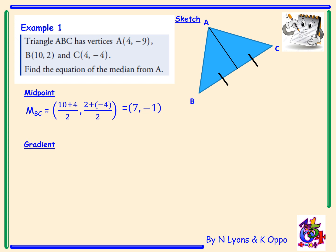To get the gradient of our median, we'll need to find our difference in Y's over our difference in X coordinates. The points we will be using are A(4, -9) and our midpoint (7, -1). The difference in Y's is -8 divided by the difference in X which is -3. Negatives top and bottom will cancel to give us a gradient of 8/3.